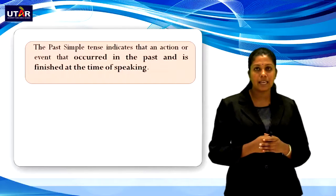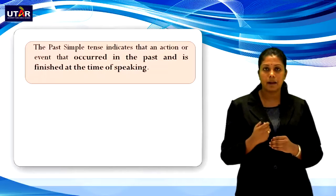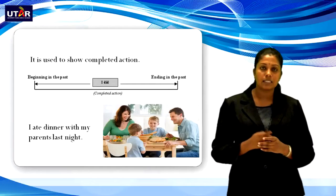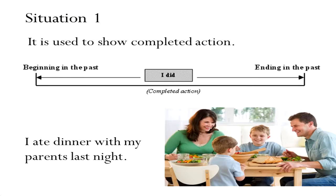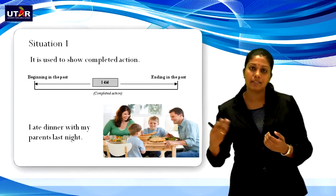The past simple tense indicates an action or event that occurred in the past and is finished at the time of speaking. Situation 1 — it is used to show a completed action: I ate dinner with my parents last night. This action happened last night; it is a completed action. The verb eat becomes ate.